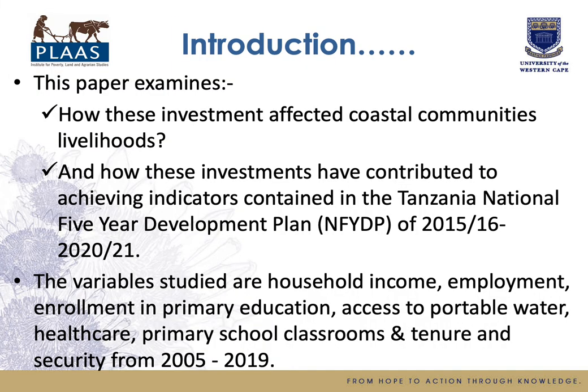This paper examines how these investments affect coastal communities' livelihood, and how these investments have contributed to achieving indicators contained in the Tanzanian National Five-Year Development Plan. Variables studied include income, employment, enrollment in primary education, access to water, healthcare centers, primary school classrooms, and tenure and security.